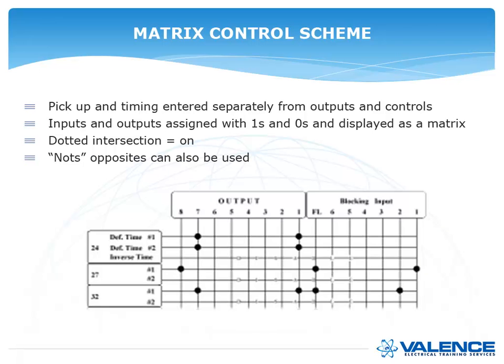The matrix scheme is very similar. This is from a Beckwith relay. This is their wonderful summary chart. And again, pickup and timing is entered separately from the outputs and controls. The inputs and outputs are assigned with 1s and 0s and displayed as a matrix, where the dots are the 1s and then 0s are not used. So in this case, that first element, the 24 definite time number 1, if it operates, it's going to operate output 7 and output 1, and nothing can block that element.